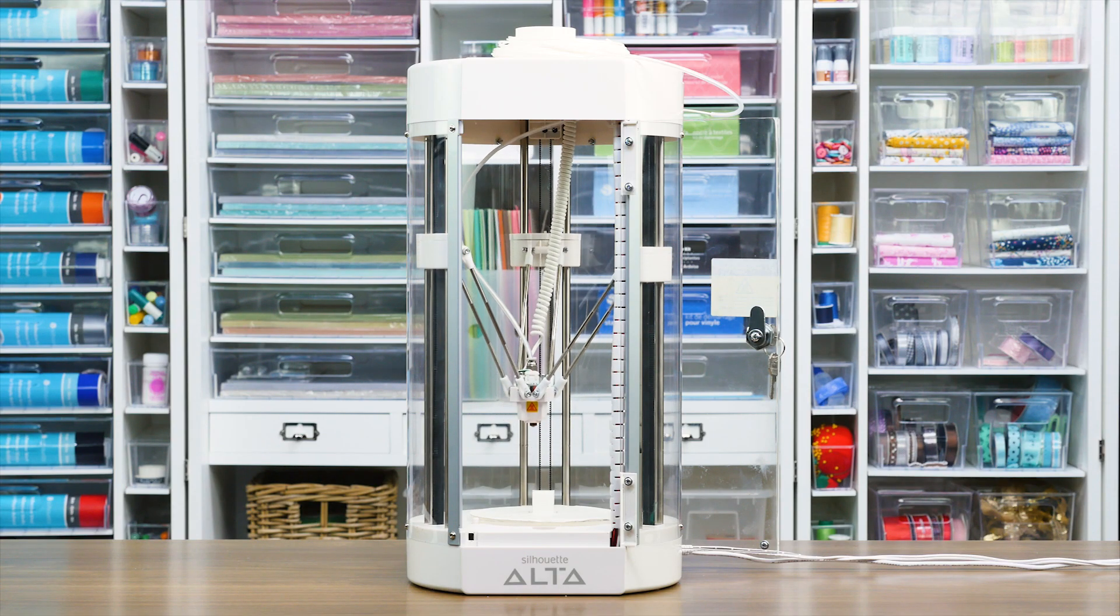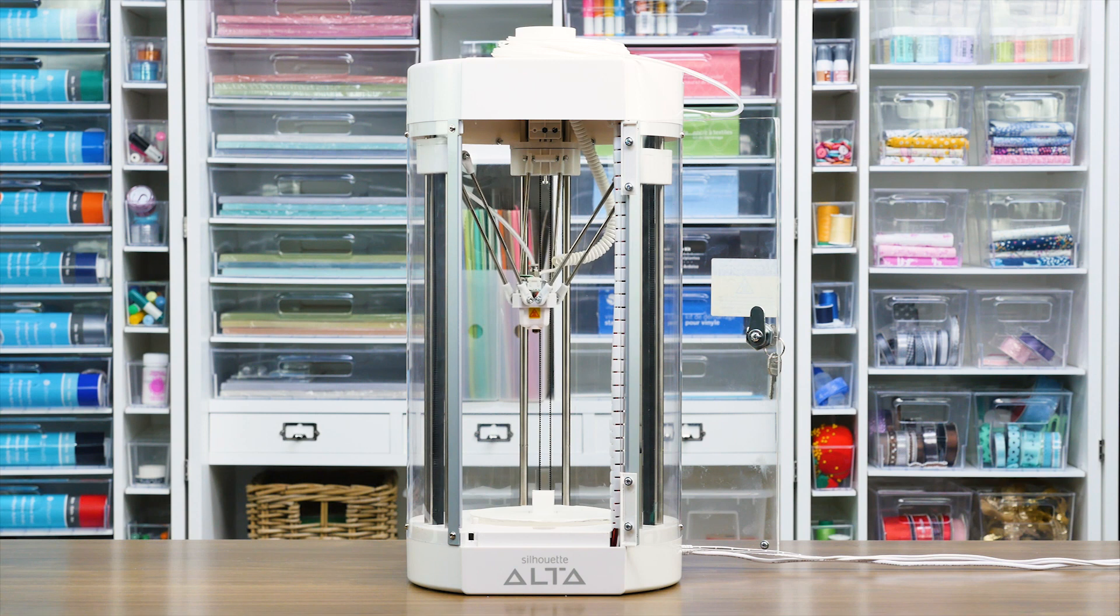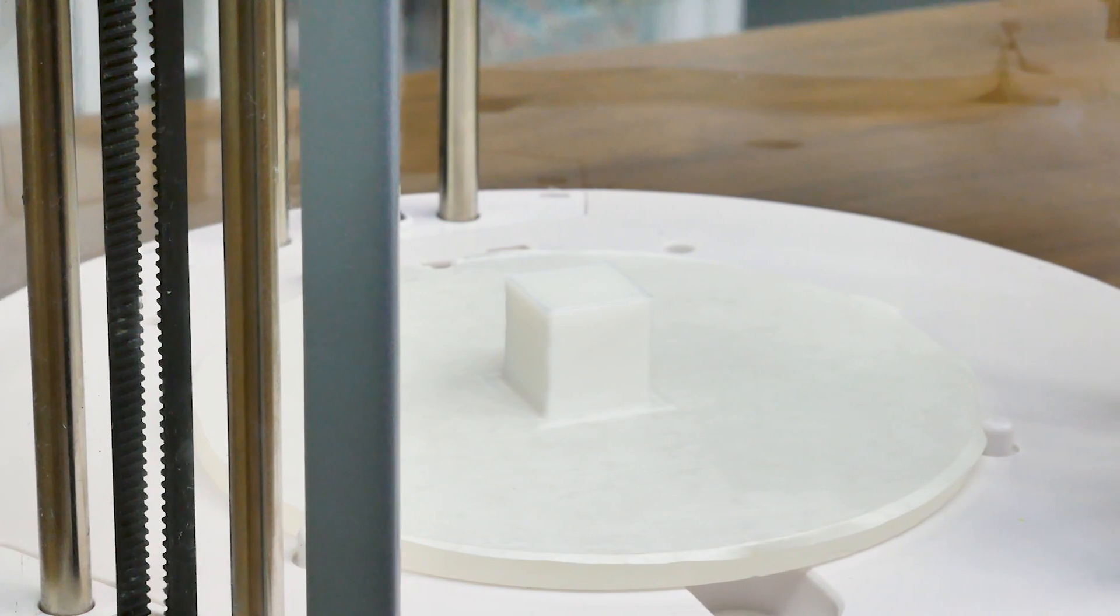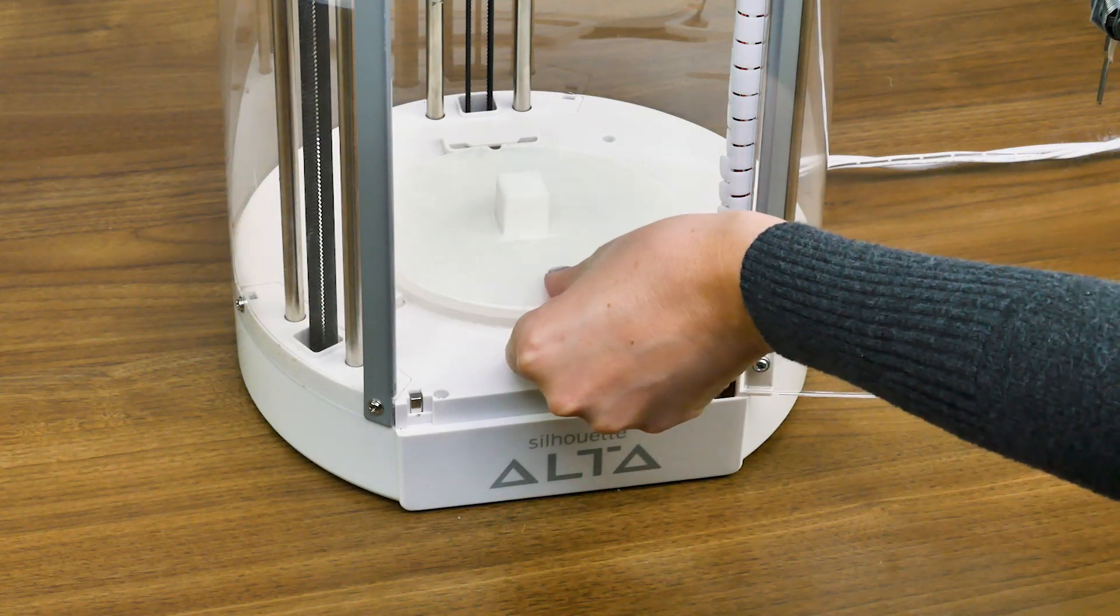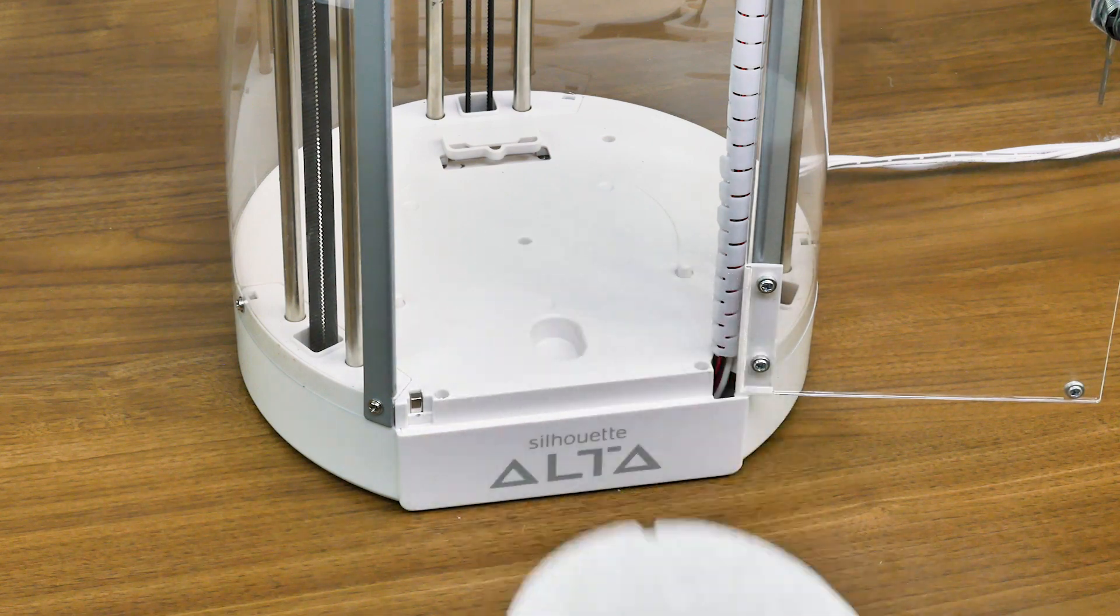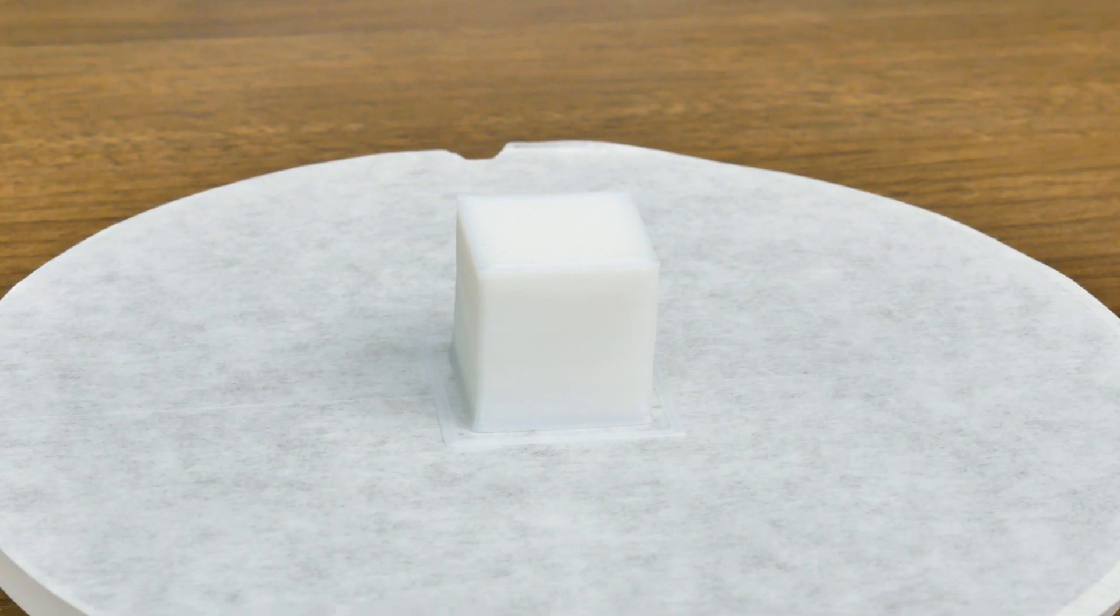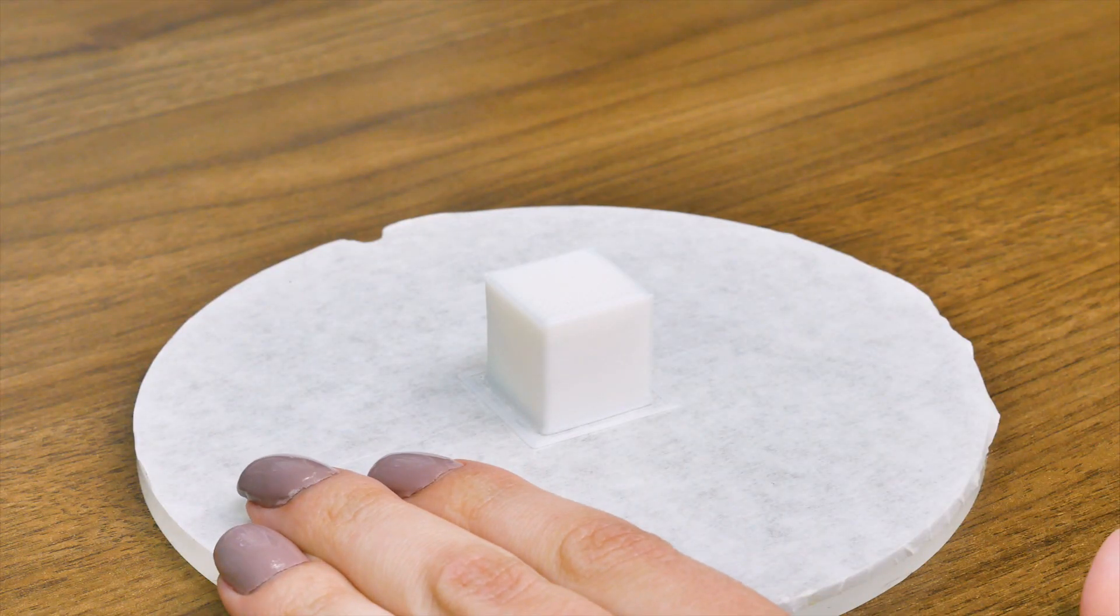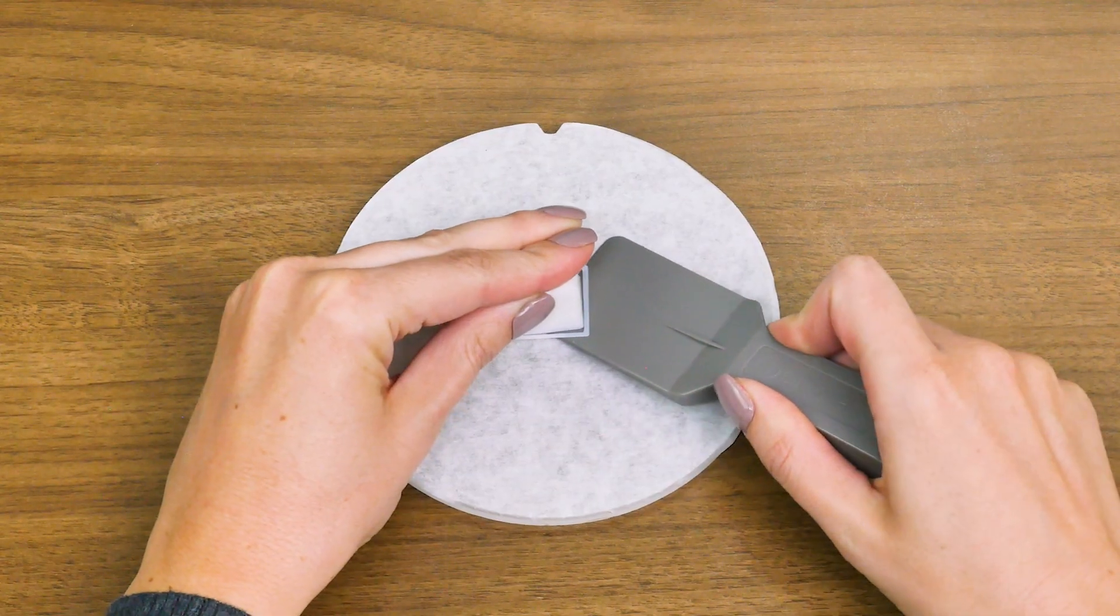When your machine is done printing, wait a few minutes for the filament to cool completely. Then remove the platform from the inside of the printer. Take your spatula tool and gently slide the spatula under the object to remove it from the platform tape.